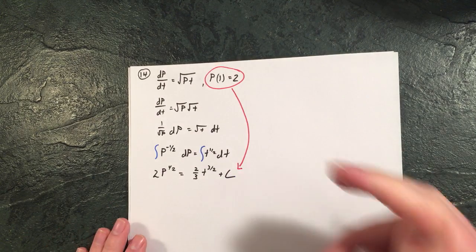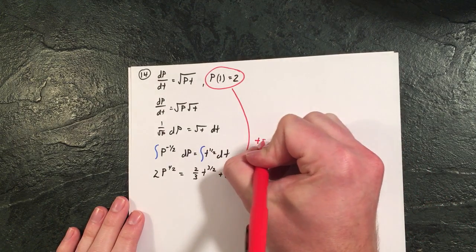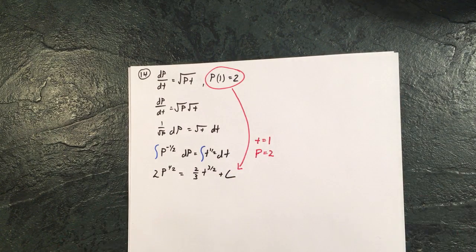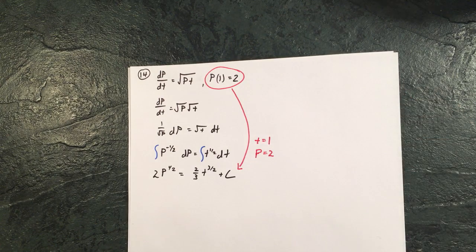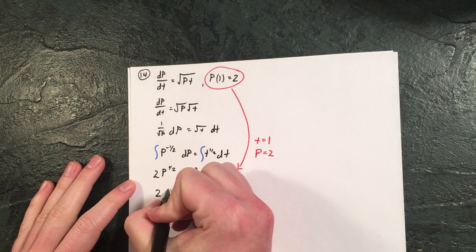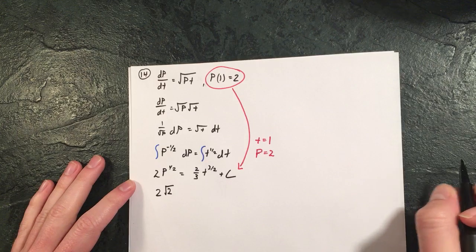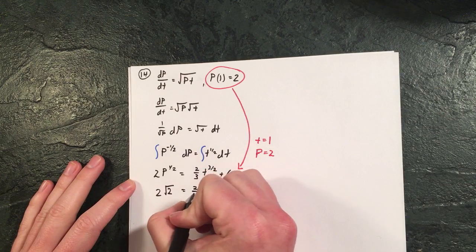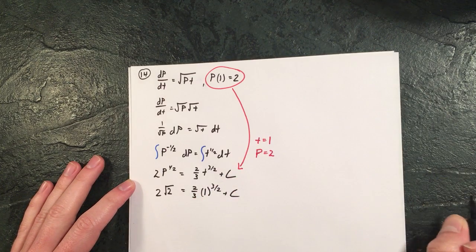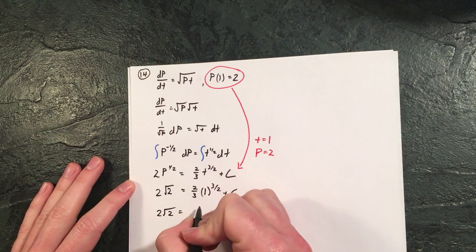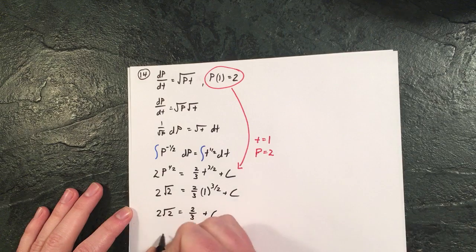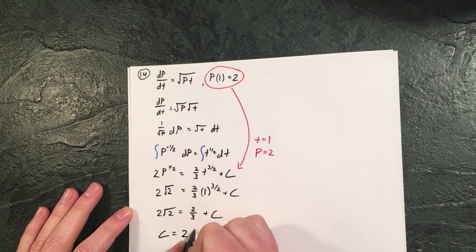Let's put this in. Remember what this means is when t is one, p is two. That's what that equation is saying up there. So that would be the square root of two here equals two-thirds, one to the three over two.